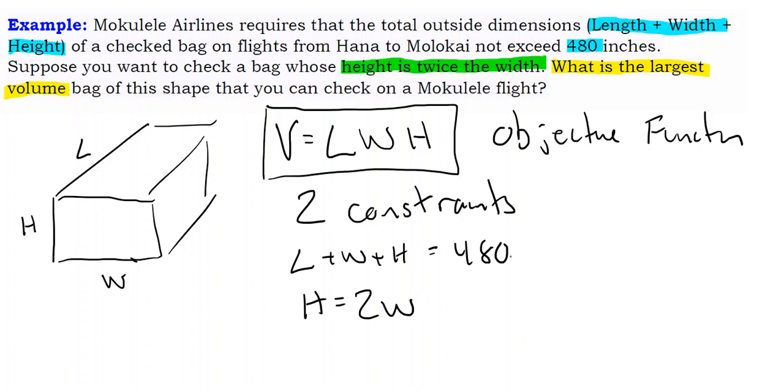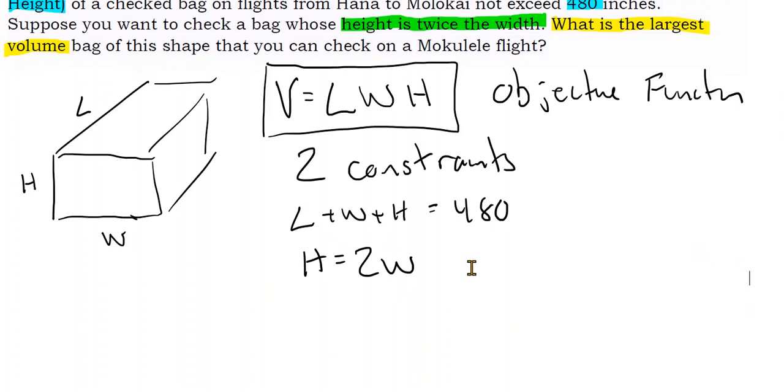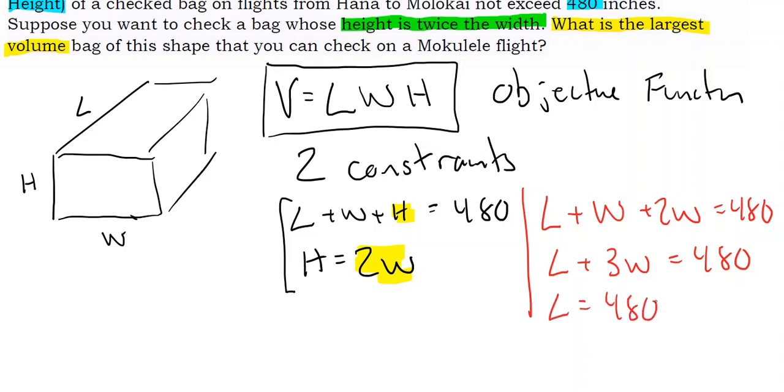So what do we do with these constraints? Well, we need to substitute them into the objective function. And the first thing we would want to try to do is to substitute two W into the first constraint. We're just going to work with these two constraints right here. And I'm going to substitute two W, let me highlight that, two W in for H. And so what I'm going to then have is I'm going to have L plus W, and then H is equal to two W. And that's equal to 480. Or L plus 3W equals 480. Now what I'm going to do is I'm going to solve that for L. So L is 480 minus 3W.